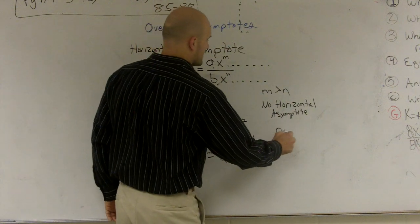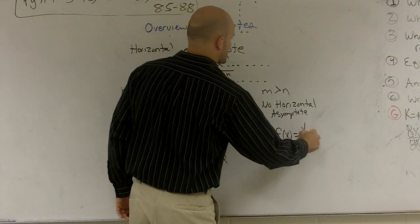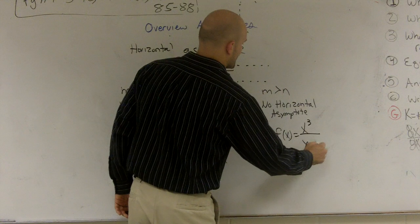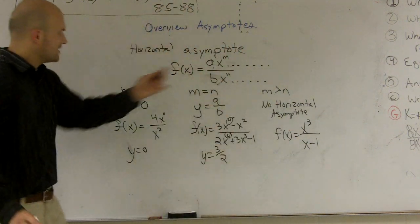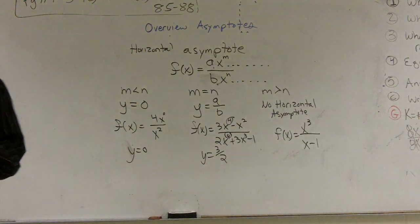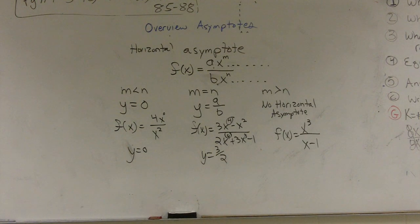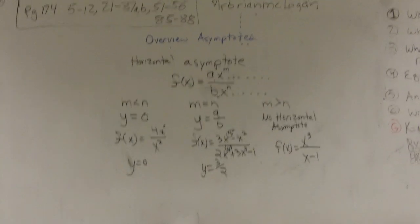Here, if I said f of x equals x cubed over x minus 1, here there's no horizontal asymptote. All right, so that's how you find horizontal and or that's an overview of asymptotes. Wow, I talked really fast. I'll see you next time. Bye-bye.